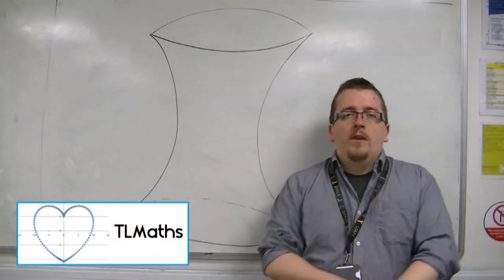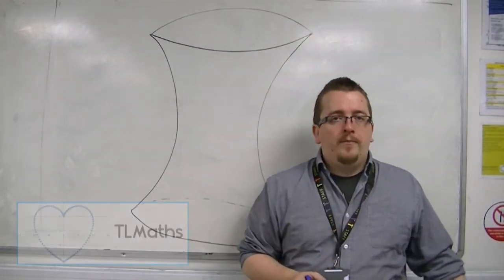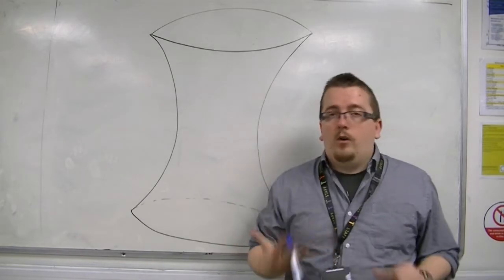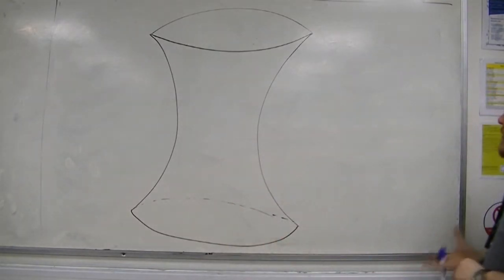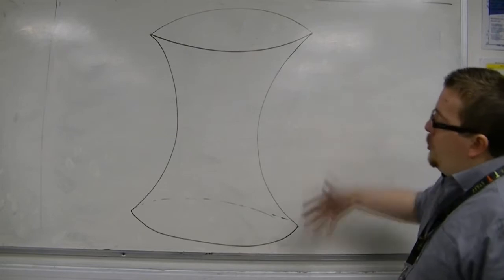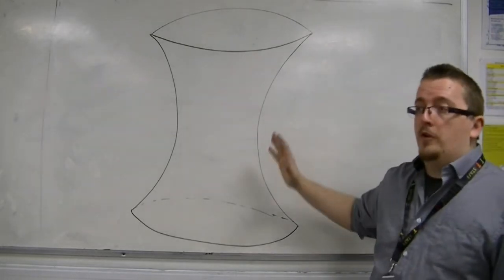So in this last section, we're going to be looking at conics. Conics are all a result of taking slices of this shape. This shape is known as the hyperboloid.